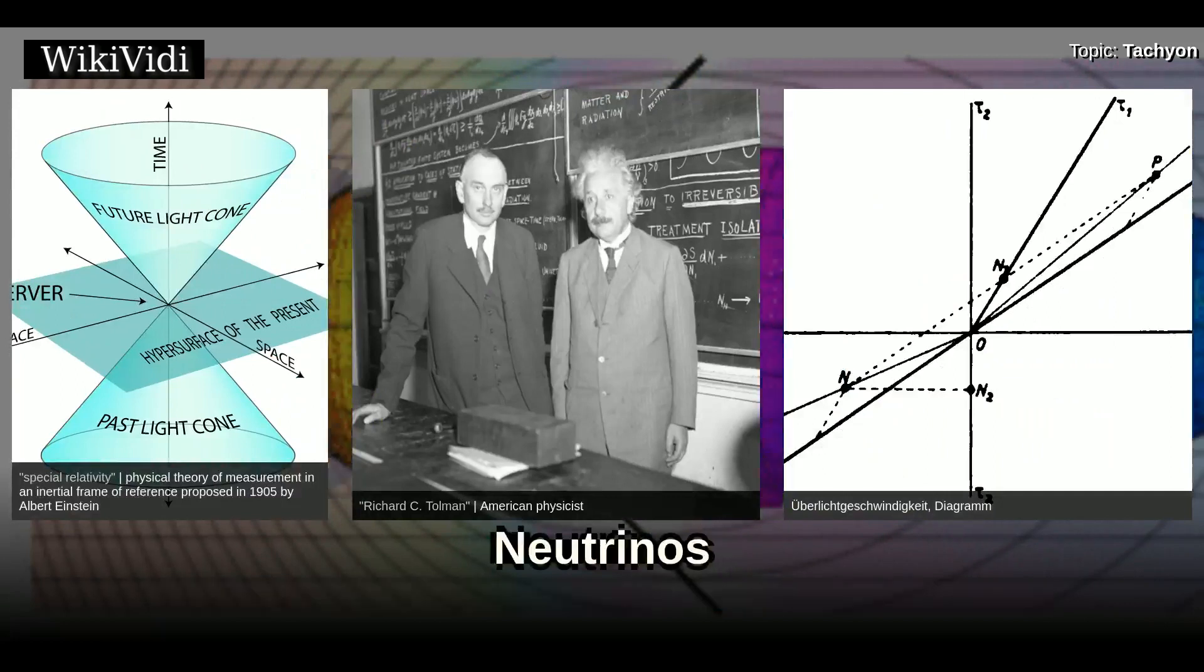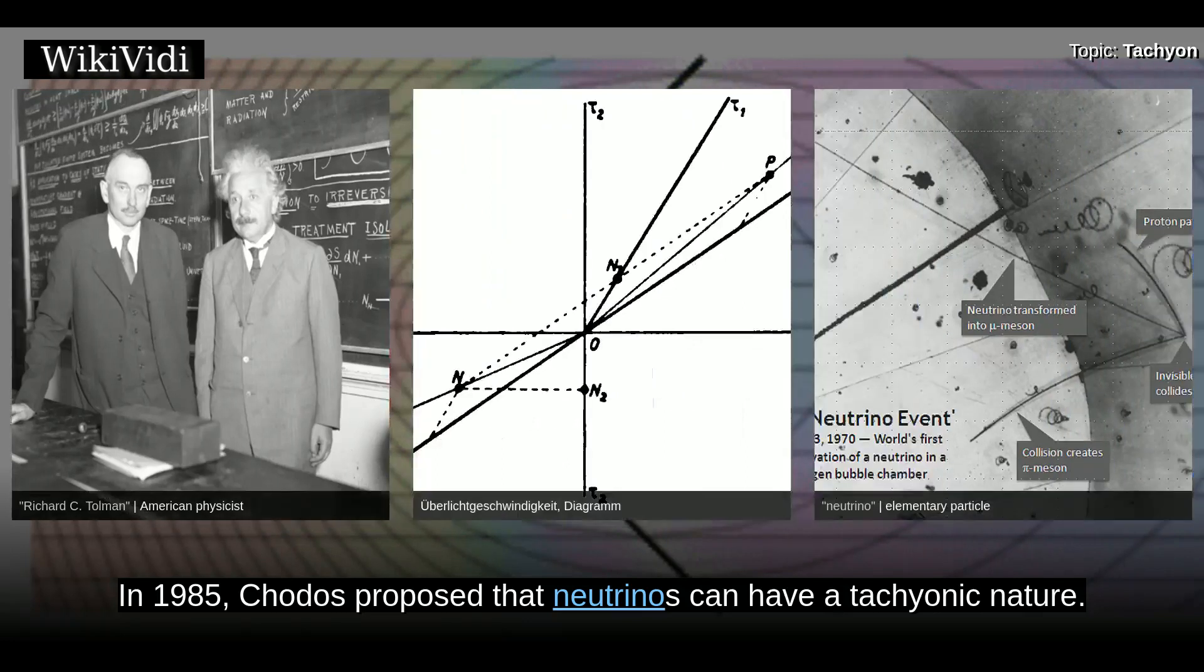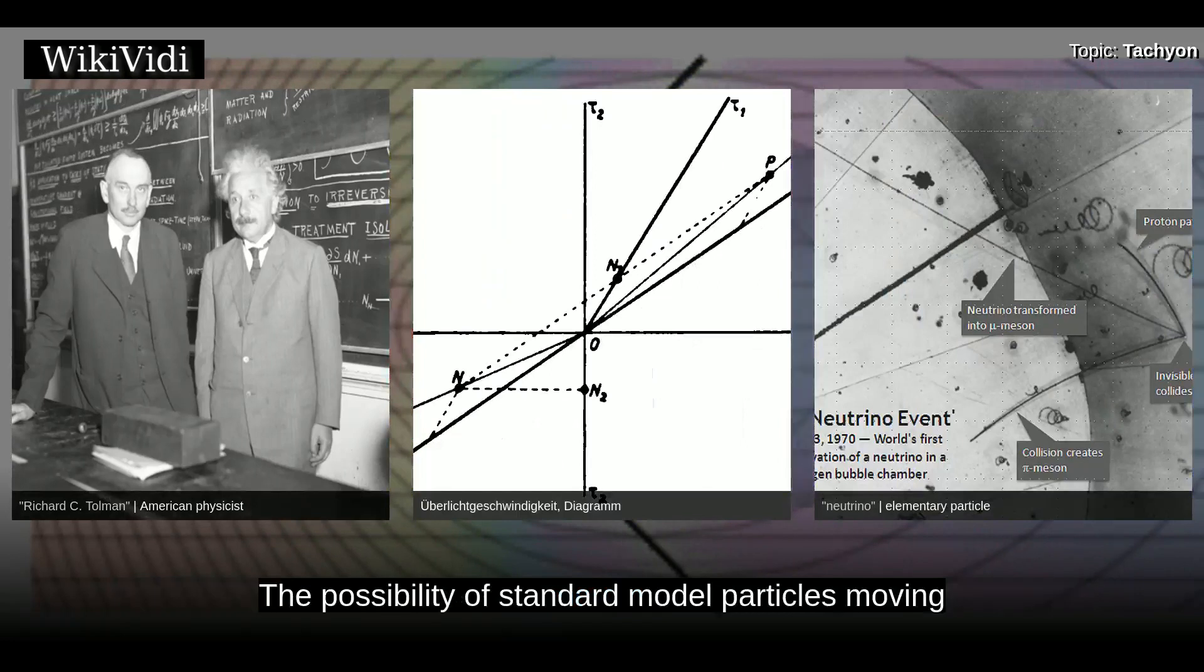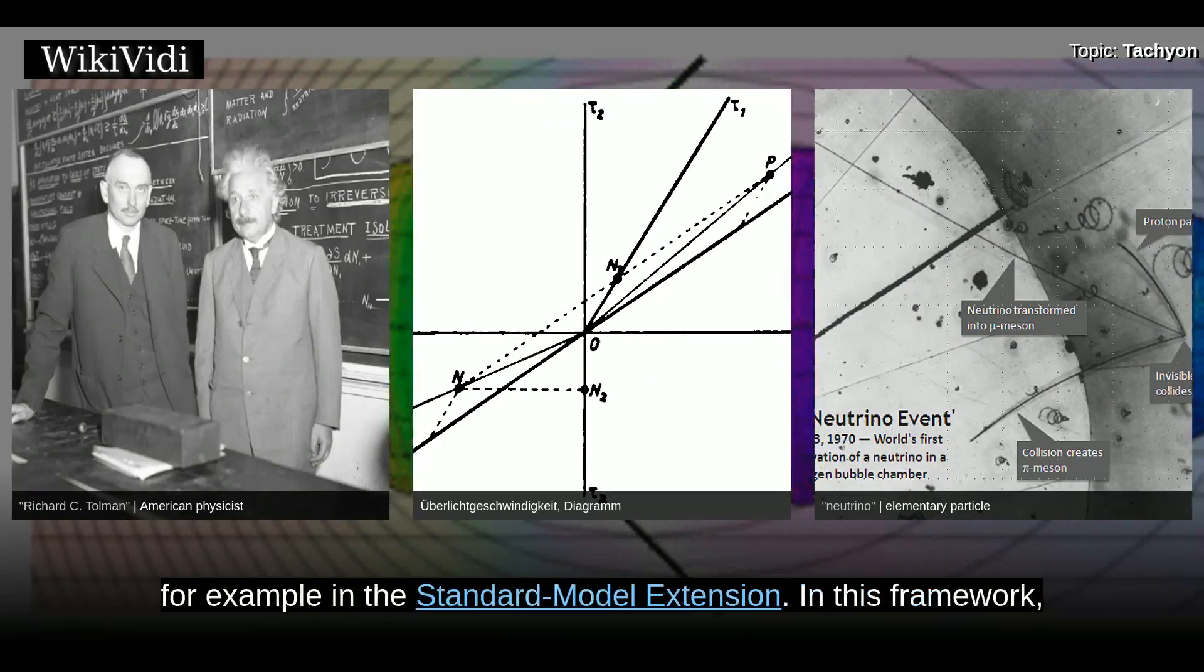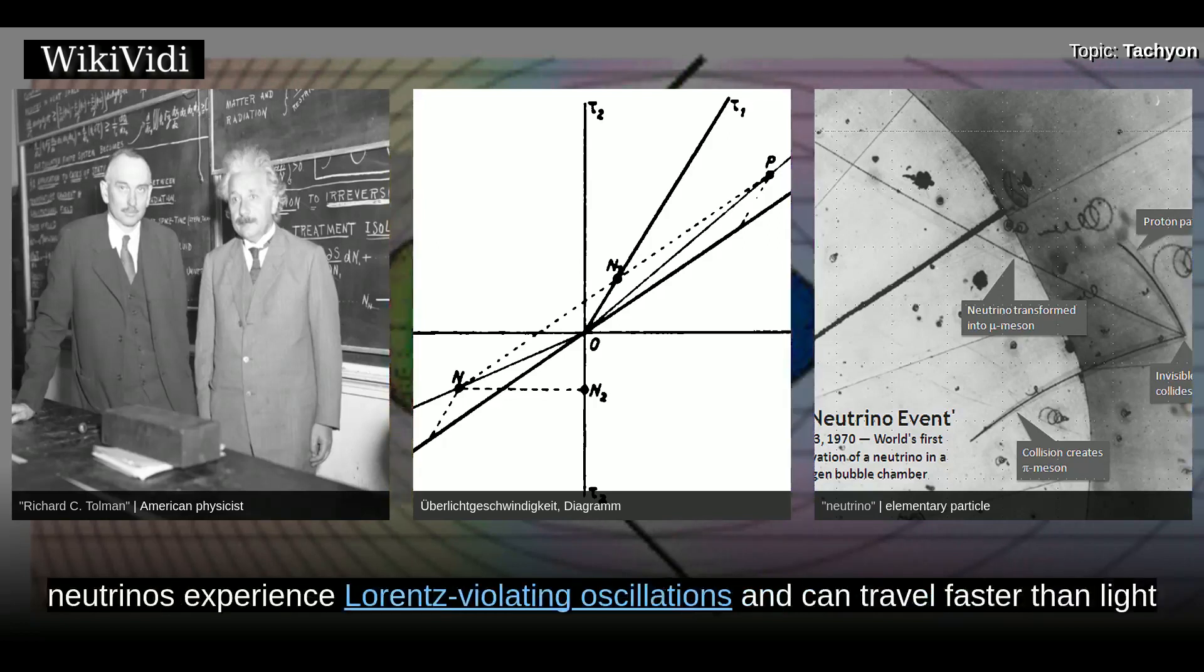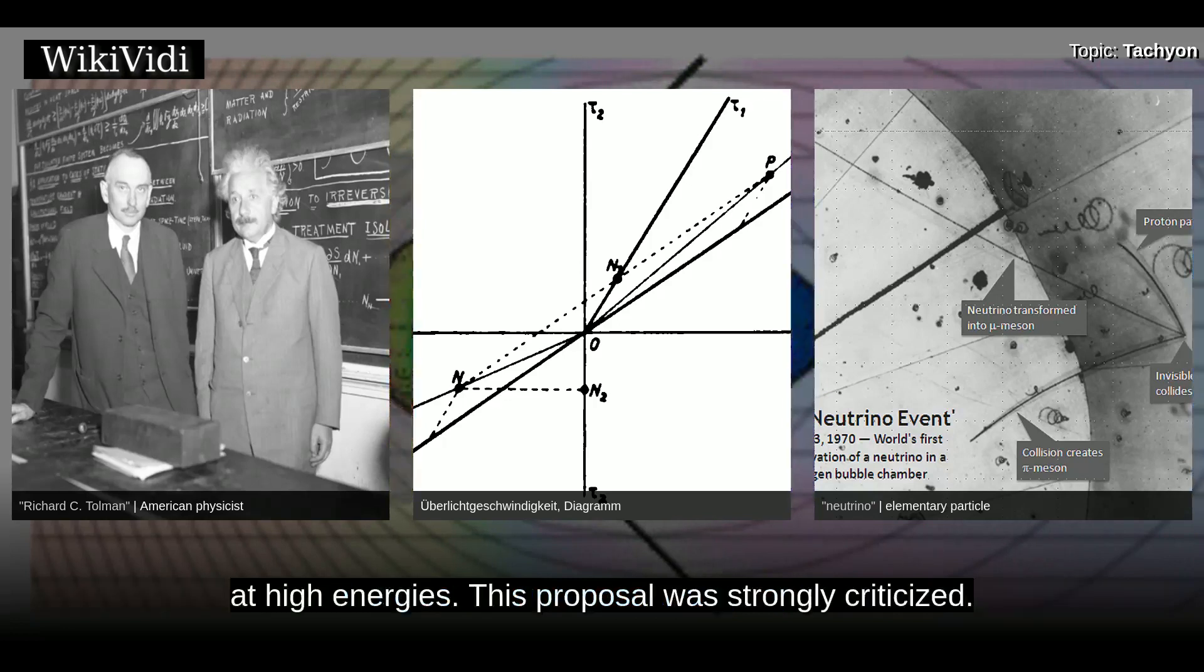Neutrinos. In 1985, Chodos proposed that neutrinos can have a tachyonic nature. The possibility of standard model particles moving at superluminal speeds can be modeled using Lorentz invariance-violating terms, for example in the standard model extension. In this framework, neutrinos experience Lorentz-violating oscillations and can travel faster than light at high energies. This proposal was strongly criticized.